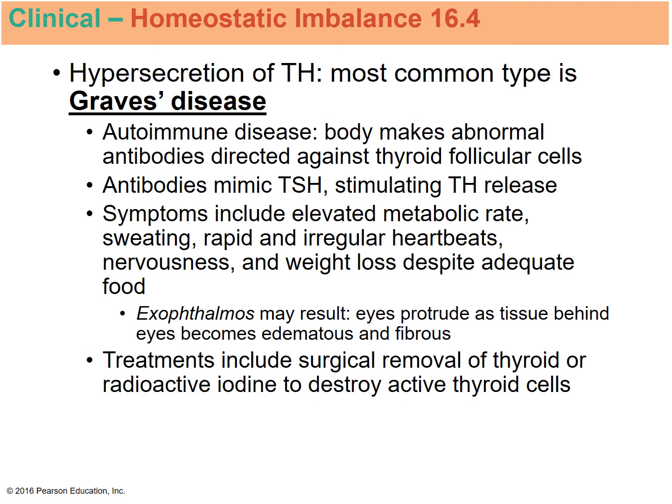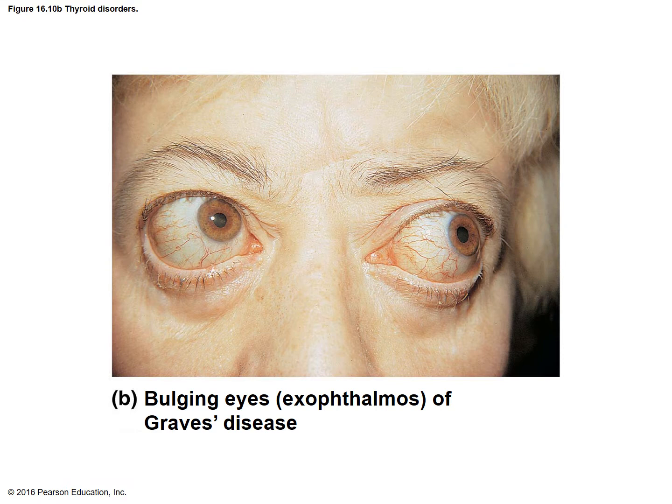Treatment for Graves' disease includes using radioactive iodine, because iodine attaches to the hormone and will destroy the cells, or you can surgically remove the thyroid. Bulging eyes are a symptom often associated with Graves' disease.